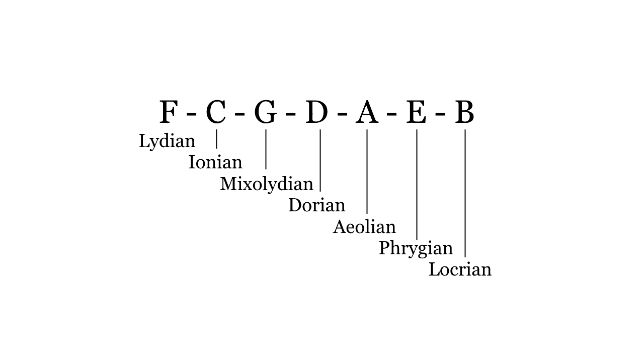If you transpose it up a fourth, that is, down a fifth, it's clear why a single note gets lowered. This construction also clarifies how the scale's modes relate to each other. The chain of fifths organizes the modes from brightest to darkest.